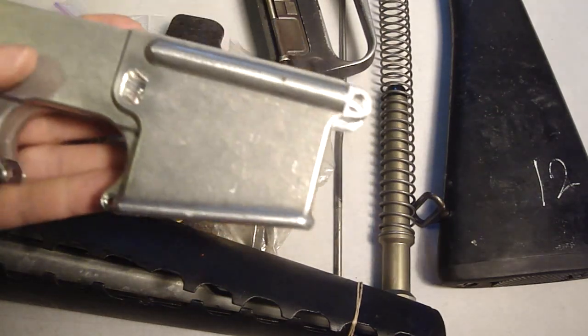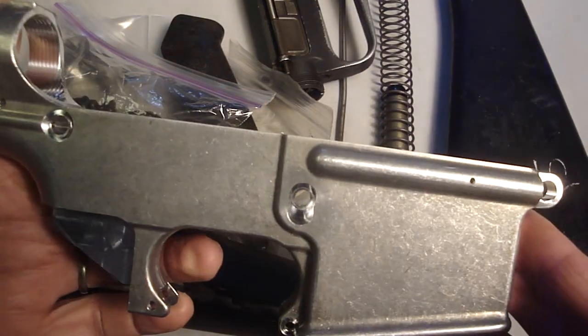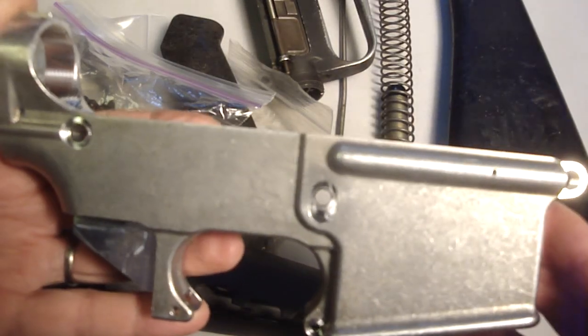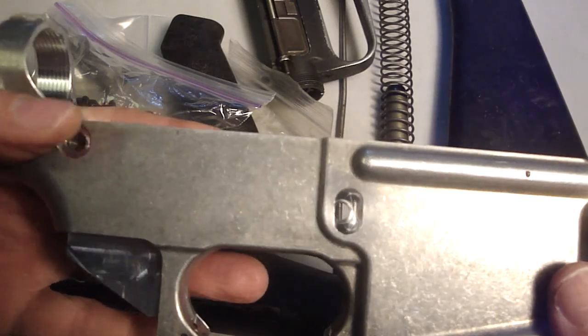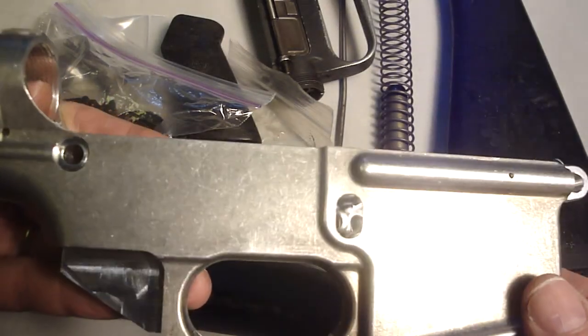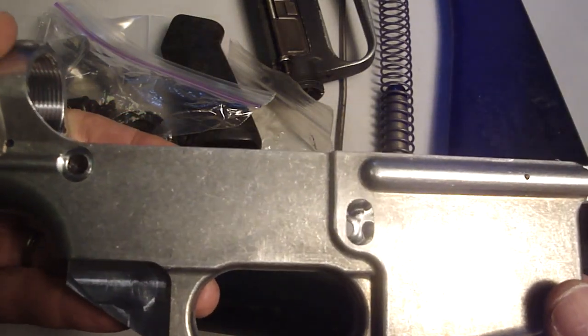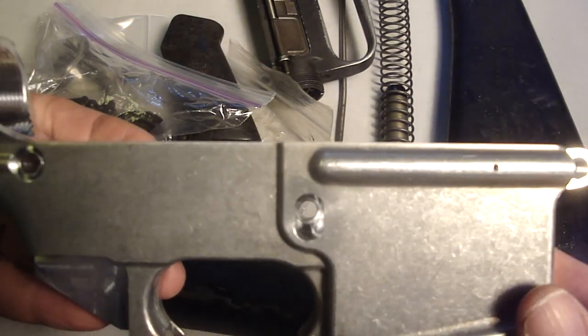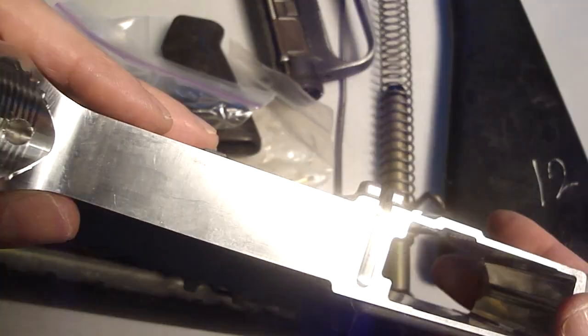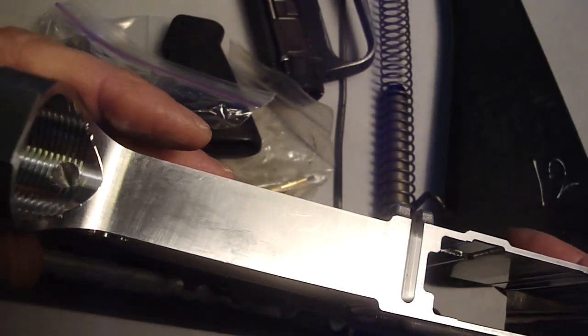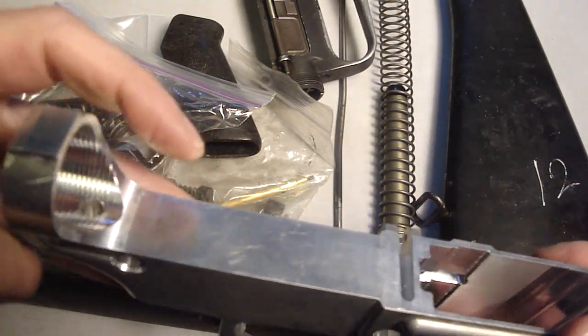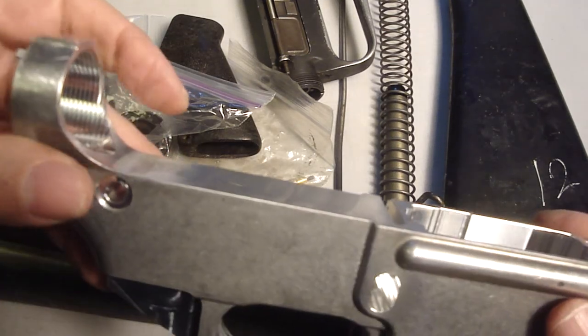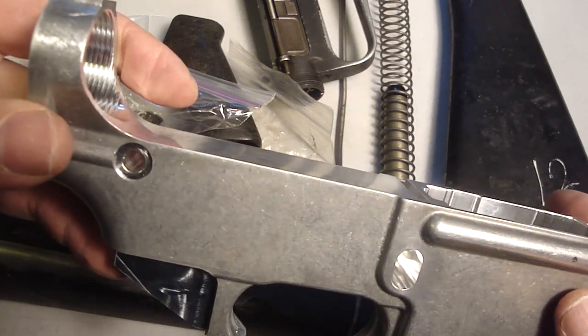Also, I've acquired a lower receiver. This is from NoDak Spud, and if you notice there's no fence around the mag release. So this matches the receivers that were used on the Colt M16s from the 70s and 80s. However, it's not finished. It's an 80% receiver, so this needs to be machined out for the pocket for the trigger and sear.